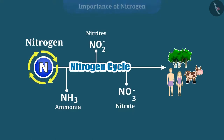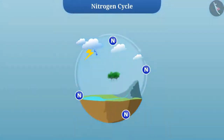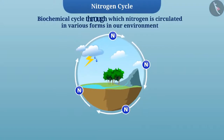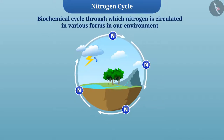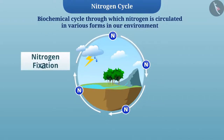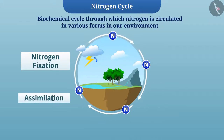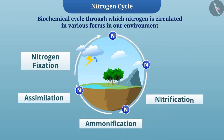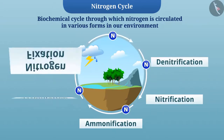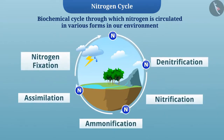So what exactly is the nitrogen cycle? The nitrogen cycle is a biochemical cycle through which nitrogen is circulated in various forms in our environment. This cycle has various stages such as nitrogen fixation, assimilation, ammonification, nitrification, and denitrification. Now let's understand the stages of the nitrogen cycle one by one.